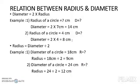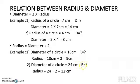Diameter is always the longer line and radius is half of it. If we need to find the radius when the diameter is given, we divide by 2. If the diameter is 18 centimeters, the radius is 18 ÷ 2 = 9 centimeters. If the diameter is 24 centimeters, the radius is 24 ÷ 2 = 12 centimeters. To summarize: diameter = 2 × radius, and radius = diameter ÷ 2.